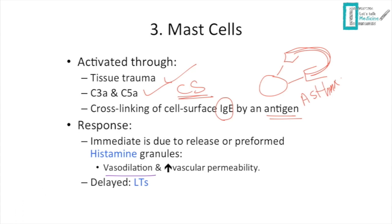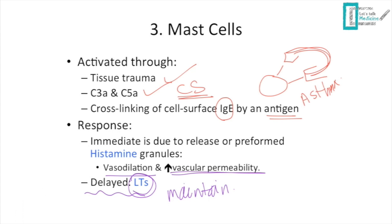The immediate response involves release of preformed histamine granules, causing vasodilation (at the arterial level) and increased vascular permeability (at post-capillary venules). The delayed effect is mediated through leukotrienes, which maintain the acute inflammation. This is high-yield: the delayed effect of mast cells is via leukotrienes.